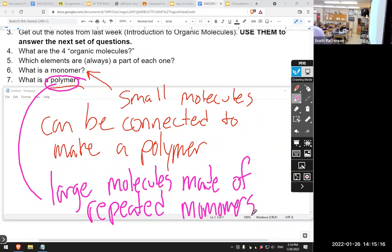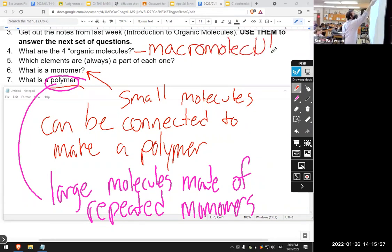Polymer - larger molecules made of repeated monomers. We got to finish the notes first. Large molecules of repeated monomers, that is a polymer. Even though we say that a monomer is a small molecule, when we're talking about organic molecules, both monomers and polymers are what we consider to be macromolecules, which means they are large molecules.